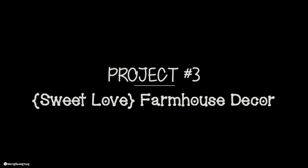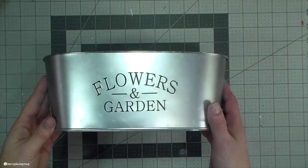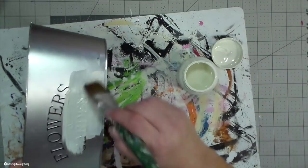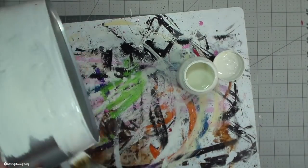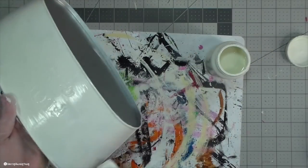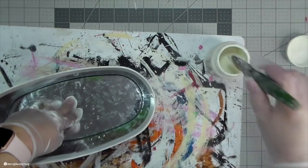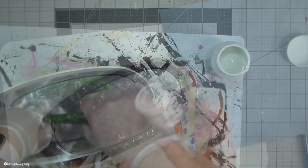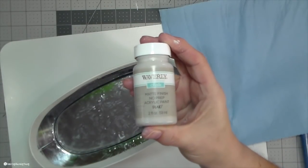For project number three is my sweet love farmhouse arrangement decor. I'm starting with one of these flowers and garden tins from the dollar tree. And I gave it two coats of chalk paint in the color plaster. And then once that was dry, then I just took a stencil brush and I just used some mineral chalk paint to give it a distressed look.